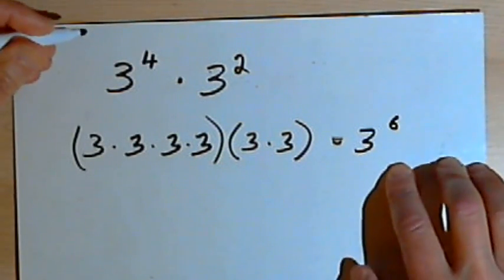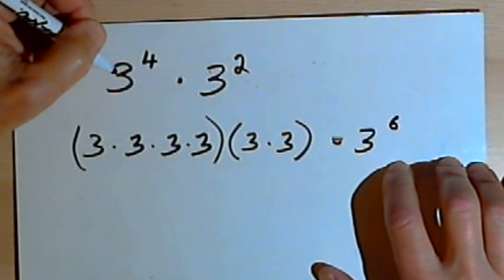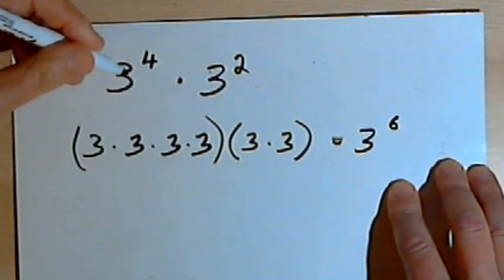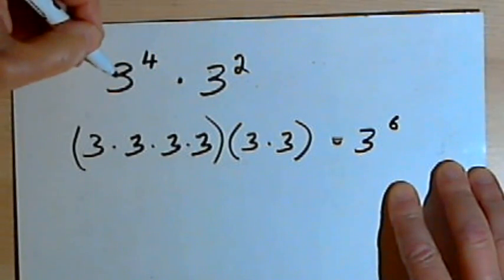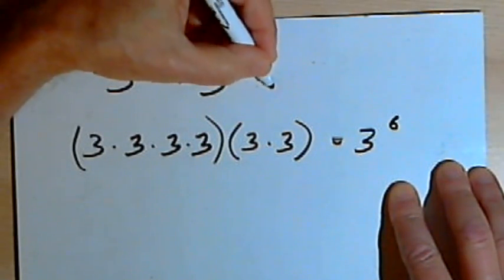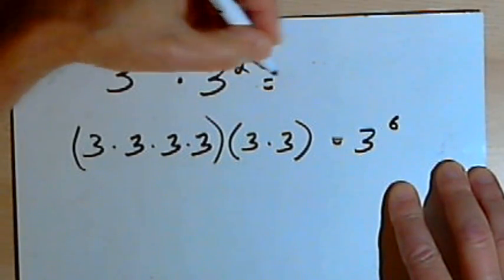So basically, the rule for multiplying numbers with exponents is going to go like this. As long as you've got the same base for both of the numbers, all you do is add the exponents together.